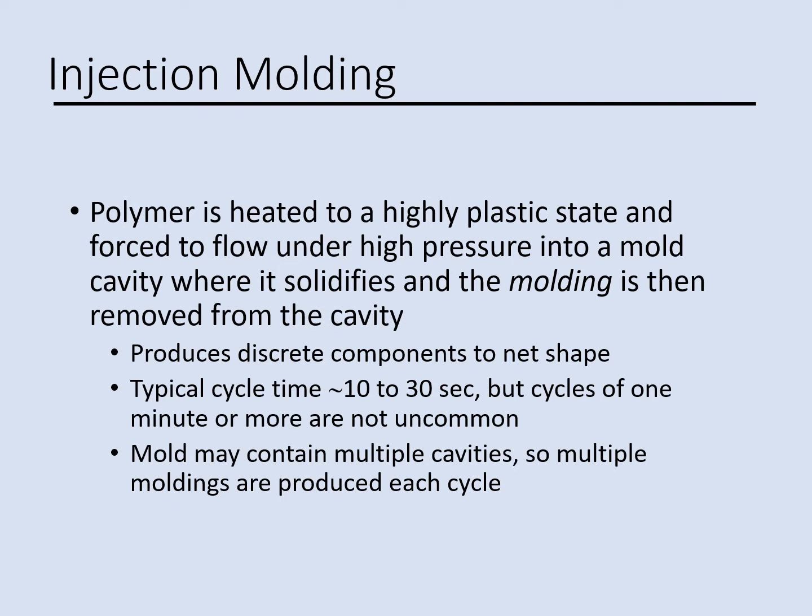The next shaping process for plastic is called injection molding. In injection molding, the polymer is heated to a high temperature — depending on the type of polymer, it varies between 100 to 200 degrees — and then the polymer becomes plastic. It can flow under high pressure into a mold cavity where the polymer is solidified, and then the molding is removed from the cavity.